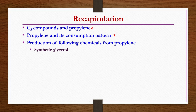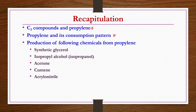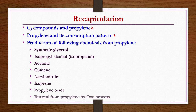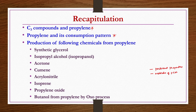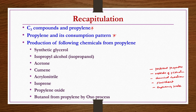These eight chemicals include synthetic glycerol or glycerin, isopropyl alcohol or isopropanol, acetone, cumene, acrylonitrile, isoprene, propylene oxide, and butanol from propylene by the oxo process. For all of these chemicals we discussed their pertinent properties, methods of production, corresponding chemical reactions, process flow charts, engineering problems, and end uses. This is what we discussed in the previous couple of lectures in this chapter.